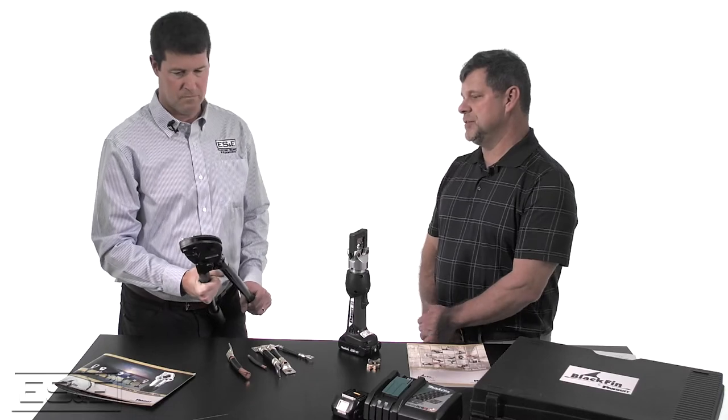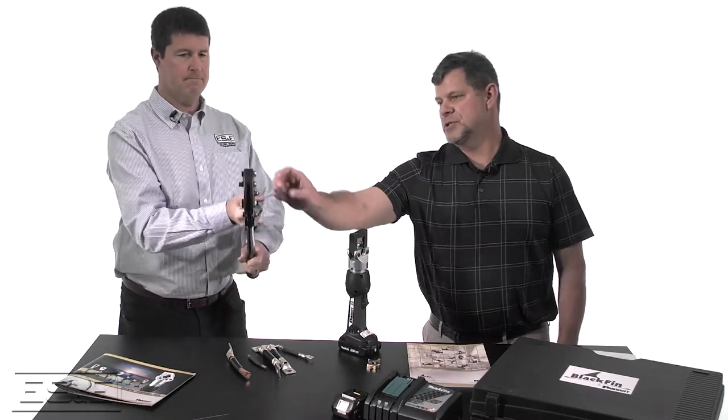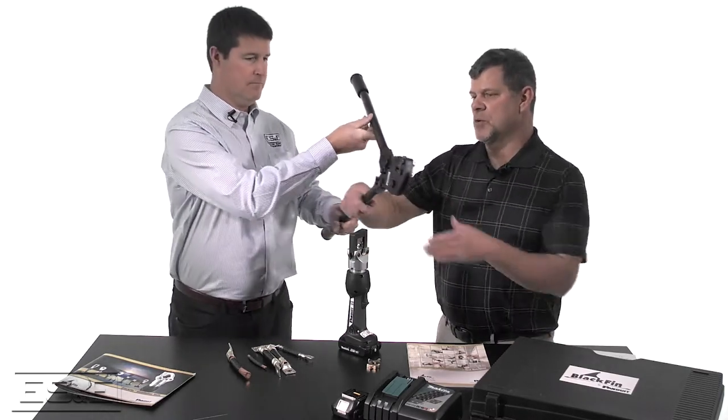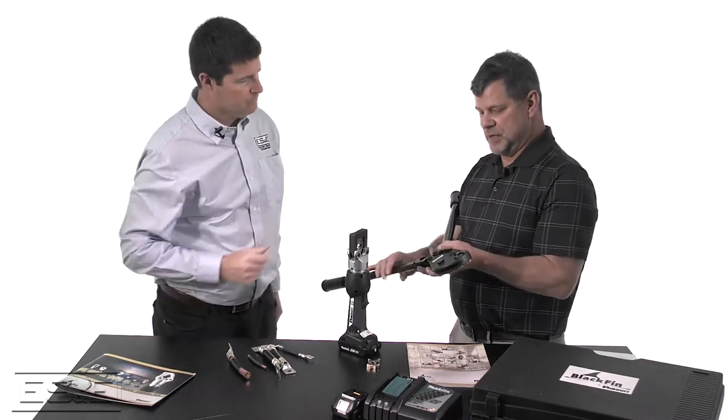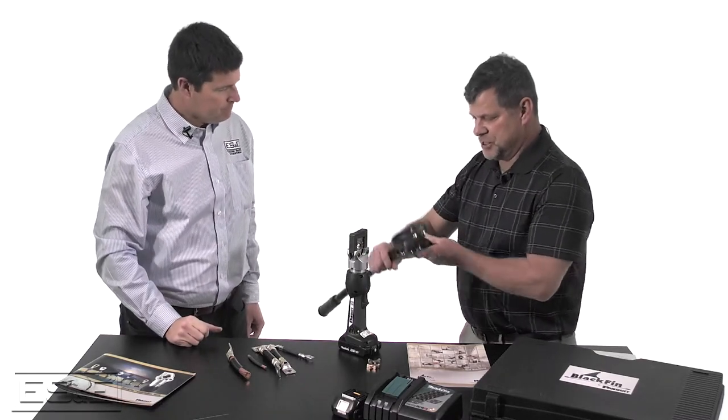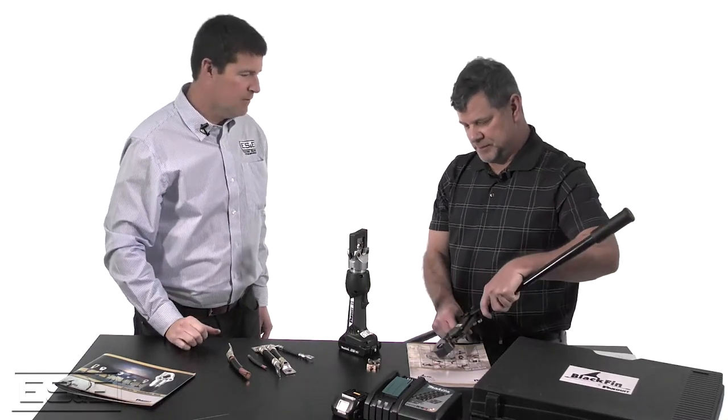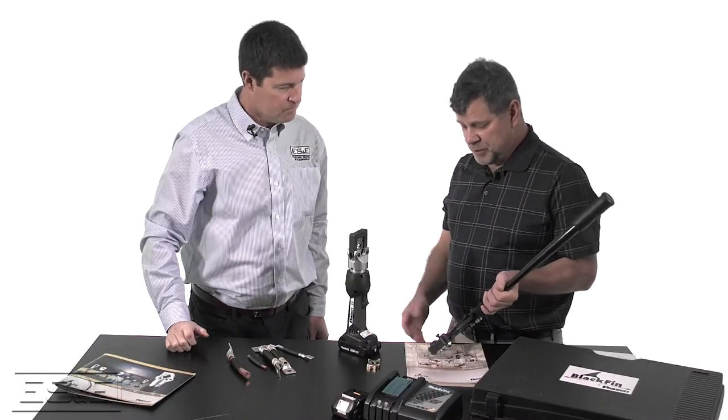It is a die-type, as we mentioned. You've got a fixed jaw here, which is going to stay in place on the lower half. Then, up top, you've got your interchangeable die on the top side. Are they pretty easy to change the dies out? Yeah, actually, they are pretty easy.